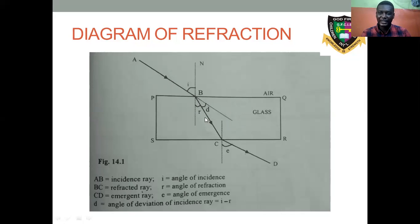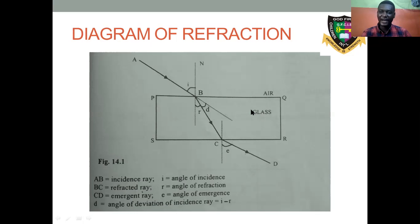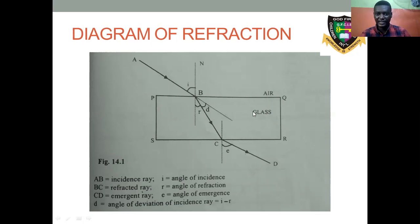But when it enters into the optically denser medium — denser means the medium is stronger. When talking about optically denser, if you say glass is thicker or stronger than air, you are not using the right vocabulary in physics. The right vocabulary is density. When you want to compare two materials and say one is thicker than the other, you use denser. That's why I say optically denser: optics for light, denser for stronger. Common sense tells us that glass is optically denser than air.